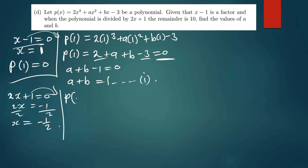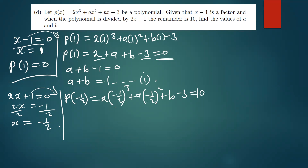Having found x = -1/2, we compute p(-1/2) = 2(-1/2)³ + a(-1/2)² + b(-1/2) - 3, and we equate this to 10 because that's the remainder we've been told.